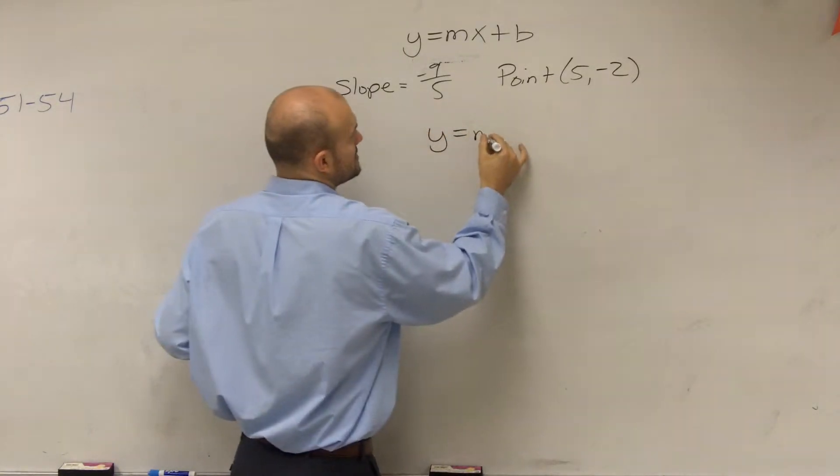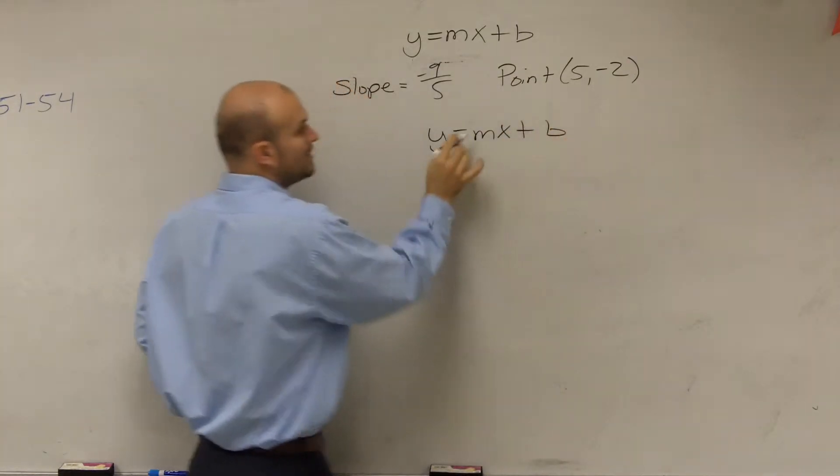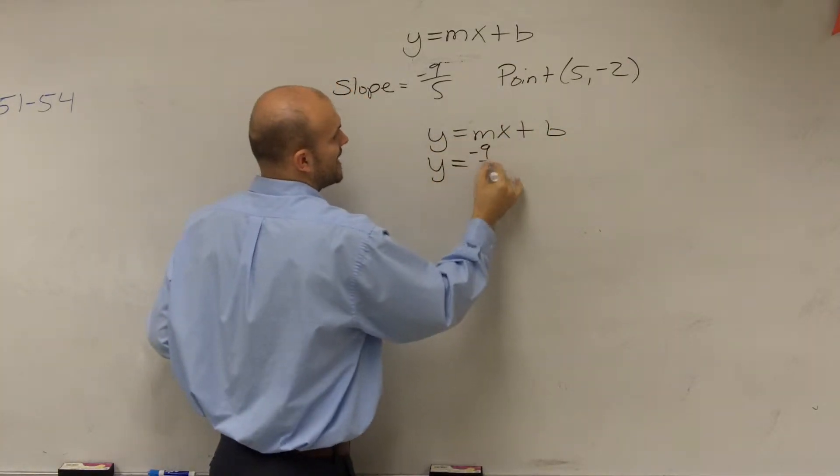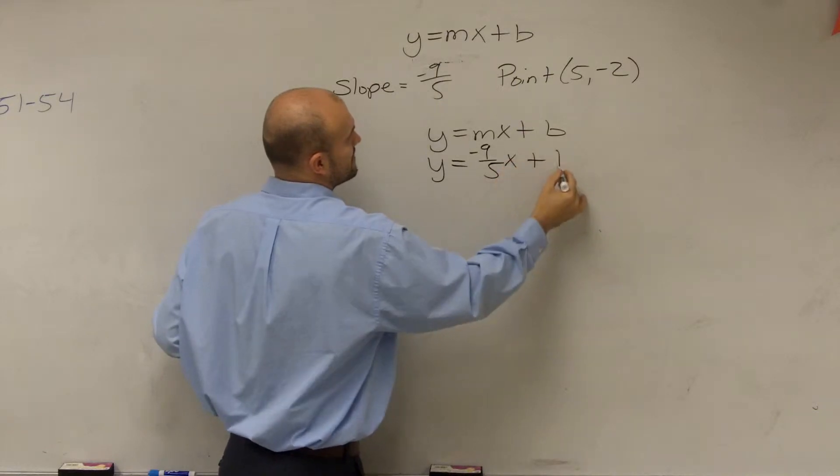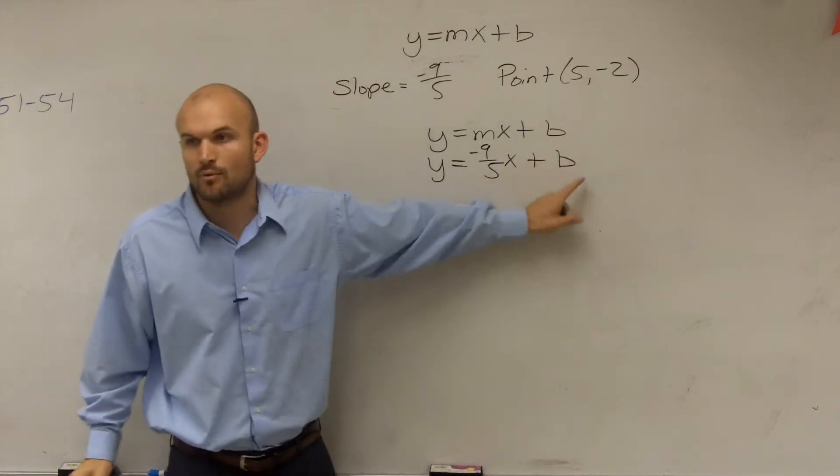Remember, we have y equals mx plus b. We know what our slope is, right? Negative 9 over 5 times x plus b. We need to just figure out what our y-intercept is.